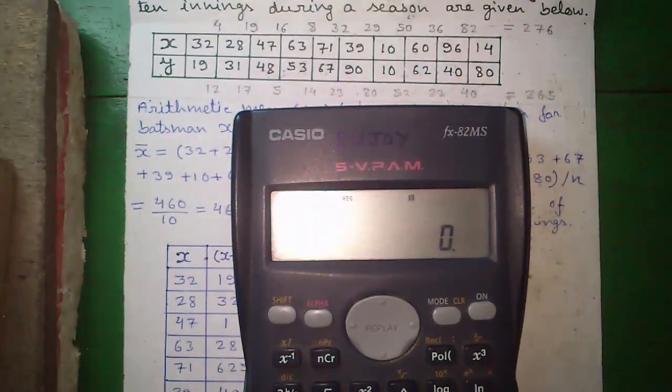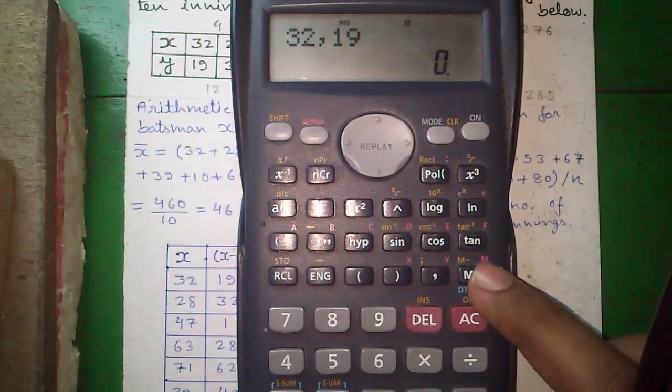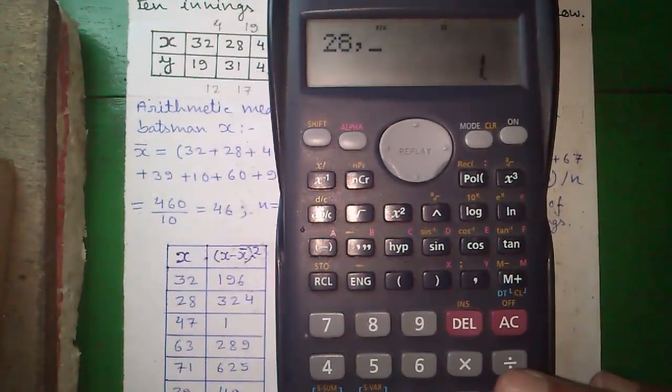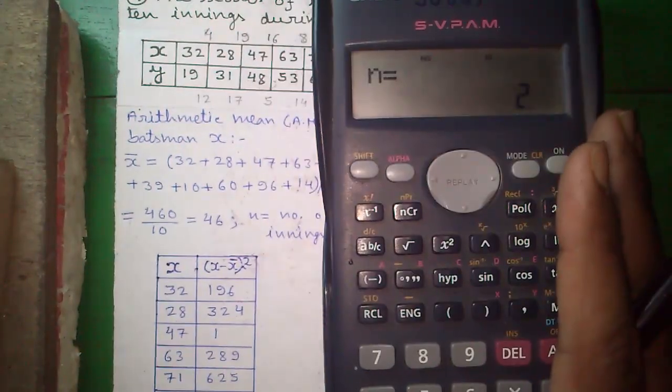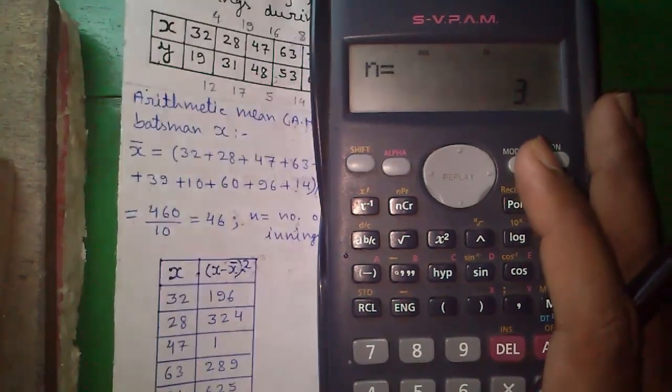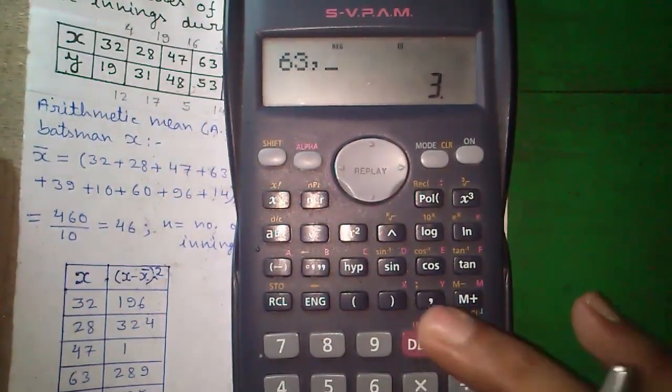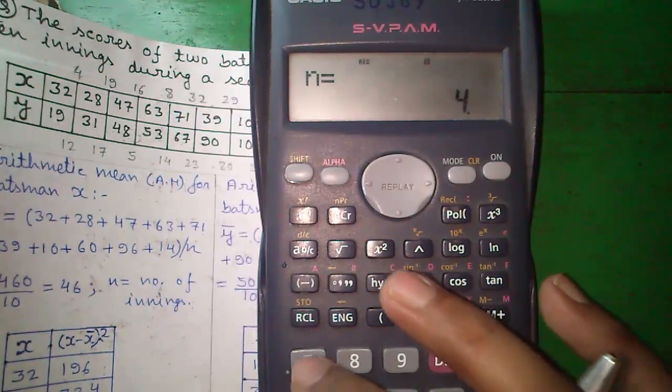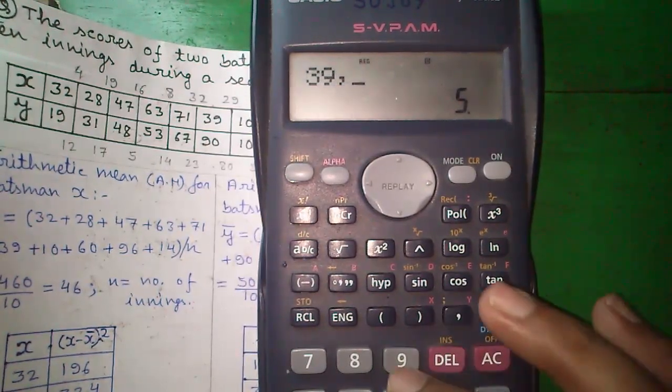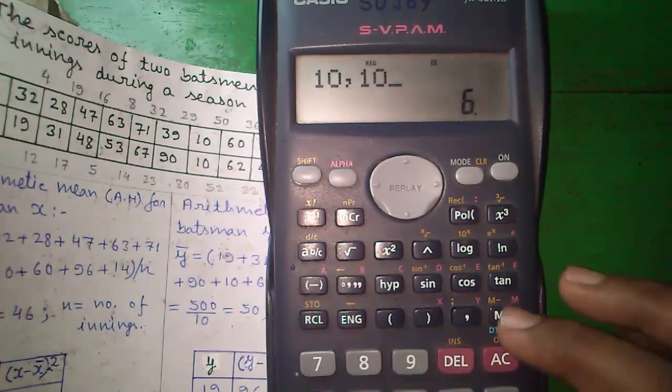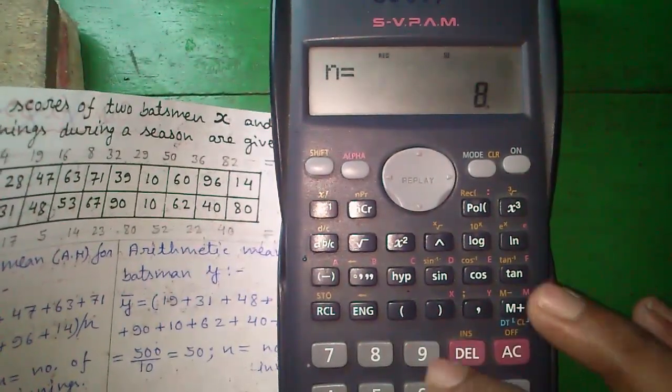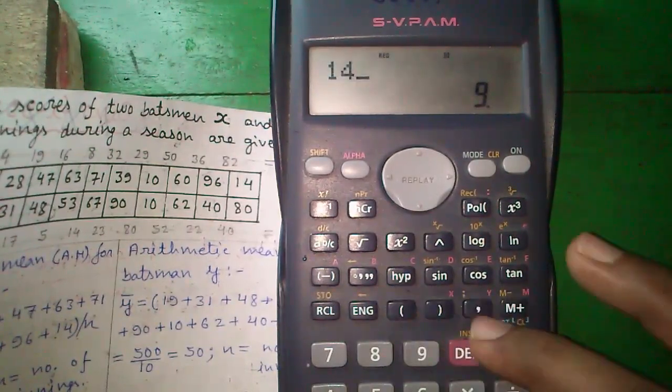In pairs 32, 90, 32, 19 and enter the data by M plus button. Next, 28, 31, 47, 48, 63, 53, 71, 67, 39, 90, 10, 10, 60, 62, 96, 40 and 14, 80.